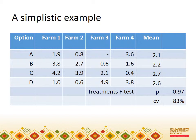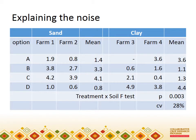Consistency of treatment effect is what is measured by the F-test for treatments, and here there is no consistency — the overall means are not very different from each other. The standard analysis would stop there, and research would go and do something different. However, let me now tell you something else about these farms. Farms 1 and 2 have sandy soil, while farms 3 and 4 have clay soil. Now there is some consistency in treatment effects: on the sandy soil, treatments B and C do well, whereas on the clay soil, it's A and D that are the best performers.